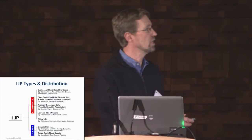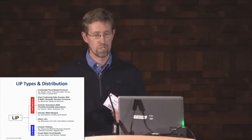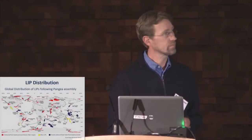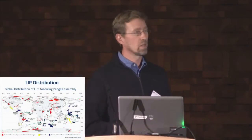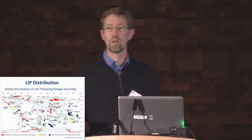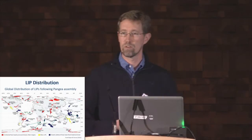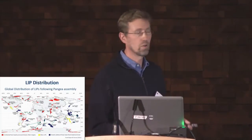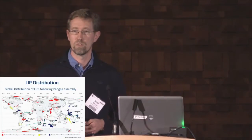However, the oceanic plateaus are the largest LIPs we see on our planet's surface today. This is a LIP distribution map from a paper last year, showing the distribution of LIPs since the assembly of Pangaea at about 320 million years ago. We can see LIPs are globally distributed, occurring on the continents and in the oceans, from the poles to the equator.